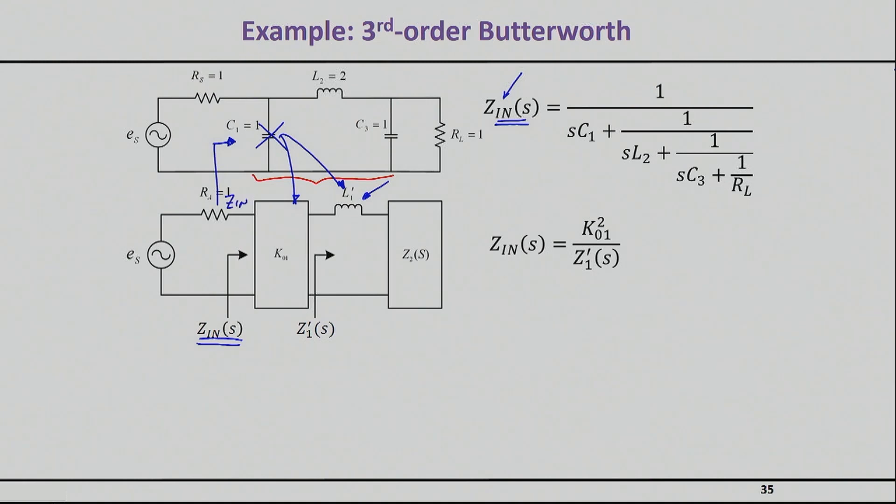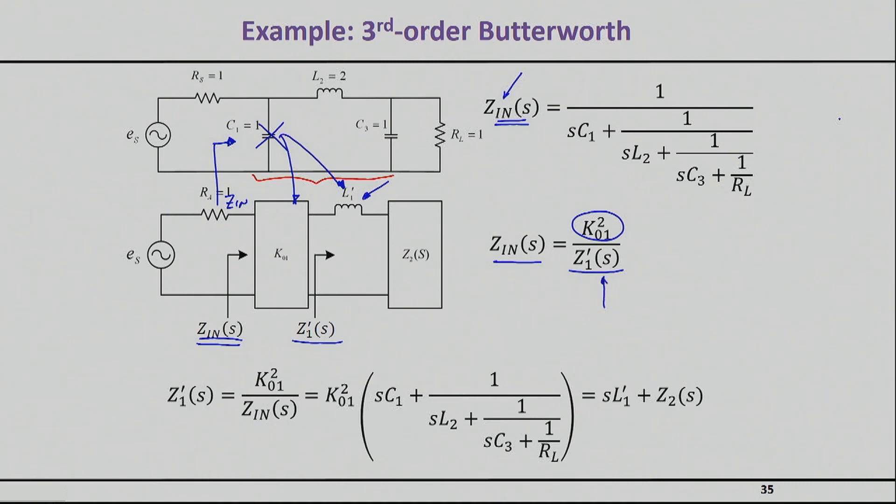I can basically use the inverter idea now and write the input impedance Z_in simply as the impedance after the inverter, which I have called here Z1 prime, part of it inverted by the inverter value which is K01 square. That's exactly coming from the property of the inverter. If that's the case, then essentially that unknown impedance that I'm trying to find is nothing else but K01 square, the value of the first coupling section, divided by the input impedance that I have.